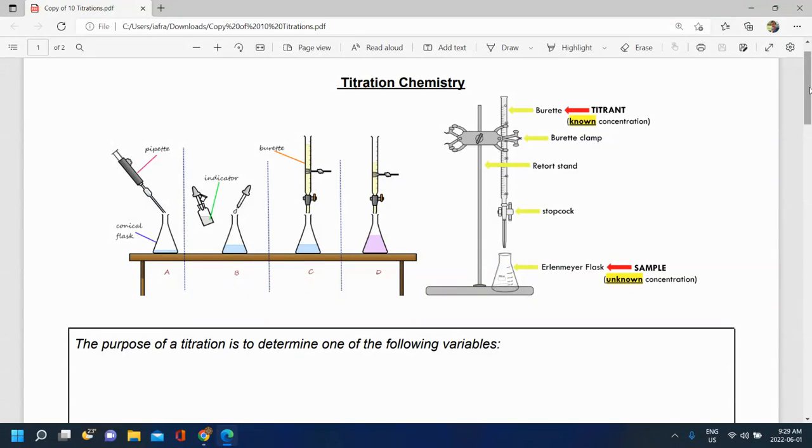It has a very fancy setup or it looks kind of fancy. This is our setup over here. As you can see there's this little tool called the burette and there's also another piece of lab equipment that we call an Erlenmeyer flask.